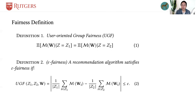For example, the notation M is a metric that can evaluate the recommendation quality such as NDCG or F1 score, and thus we use the notation M(W_i) to represent the recommendation quality of user i.